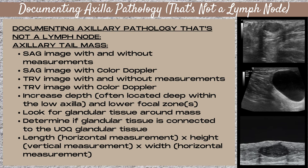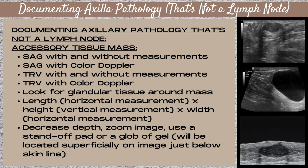It's not important which plane you take your measurements from, as long as you have a length (horizontal), a height (vertical), and a width (horizontal). To document an accessory tissue mass: sagittal with and without measurements, sagittal with color Doppler, transverse with and without measurements, transverse with color Doppler. Look for glandular tissue around the mass — if it's just below the skin line it's accessory breast tissue; if it's deeper and connected to the upper outer quadrant, it's axillary tail tissue. For an accessory tissue mass, decrease your depth since it's superficial, and consider zooming or using a standoff pad or ultrasound gel glob.